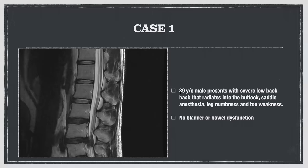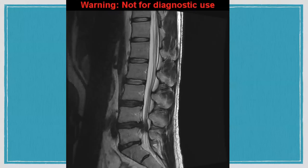Case one: a 39-year-old male presents with severe low back pain radiating into the buttocks, saddle anesthesia, leg numbness, and toe weakness, with no bladder or bowel dysfunction. On the sagittal image near the midline — sacrum, L5, 4, 3, 2, 1 — the spine looks reasonable overall, with some disc desiccation. At L4-5 there is a large disc herniation/extrusion coming out, looking like a tail, and the cauda equina nerve roots appear severely compressed.